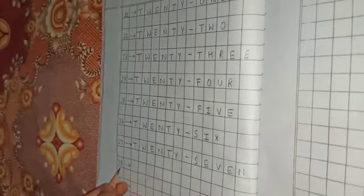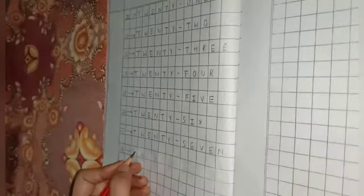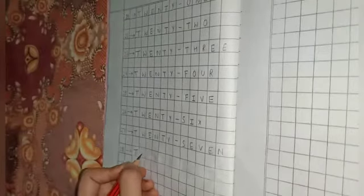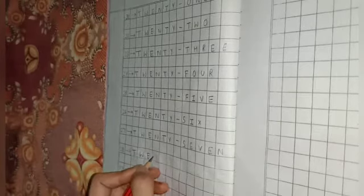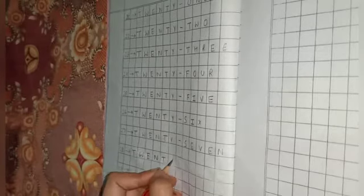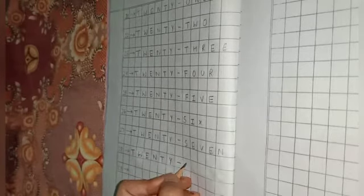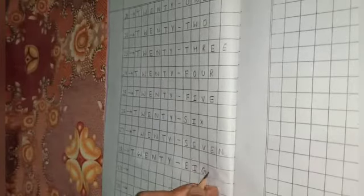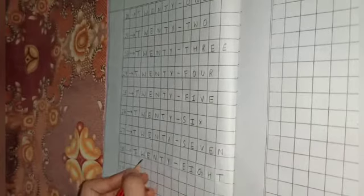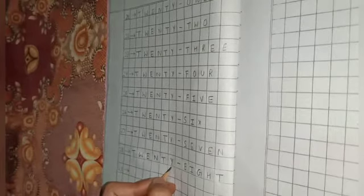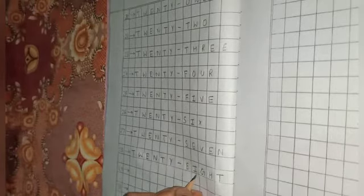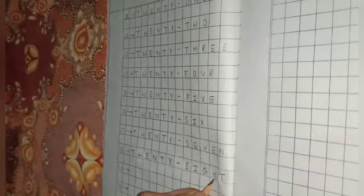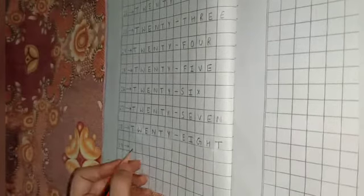Next is 28. T-W-E-N-T-Y, that's 20. E-I-G-H-T, that's 8. Twenty-eight, 28.